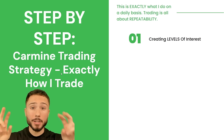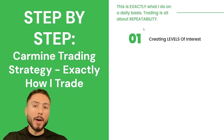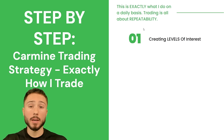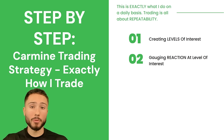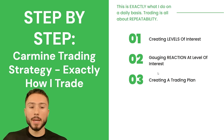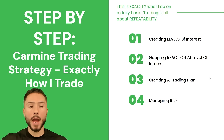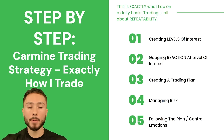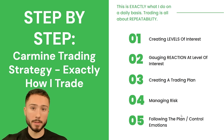What's up everyone? This is going to be a step-by-step tutorial going over my trading strategy and exactly what I look out for — how I trade in depth — with five crucial steps to how I navigate the markets. The first step is creating levels of interest. Point number two is gauging the reaction at those levels of interest. Point number three is creating a trading plan, then managing my risk around this plan. And point number five, very important, the cherry on top is following that plan and controlling emotions.